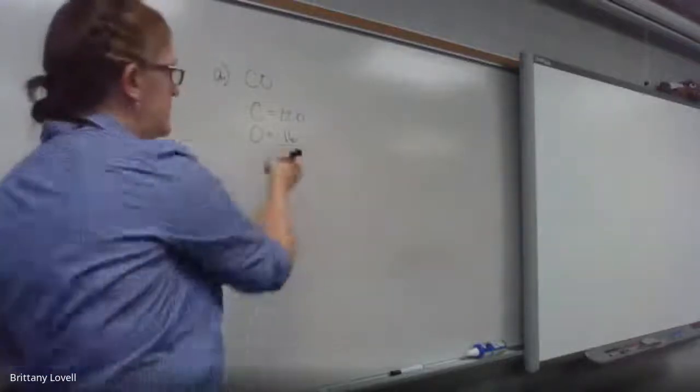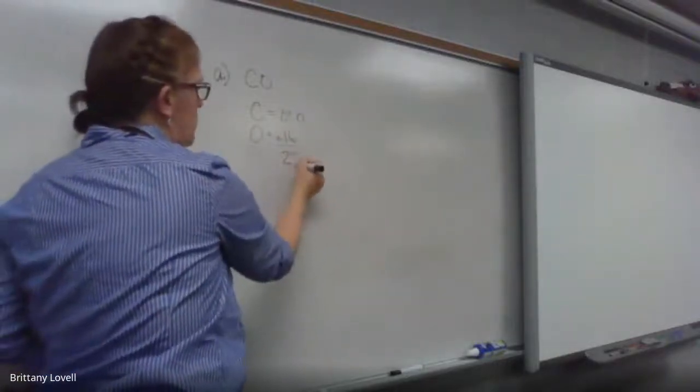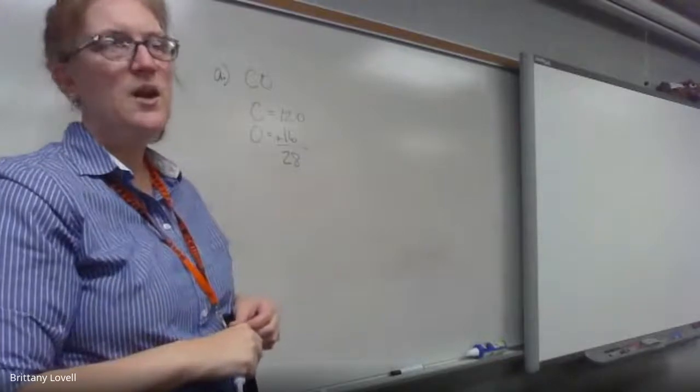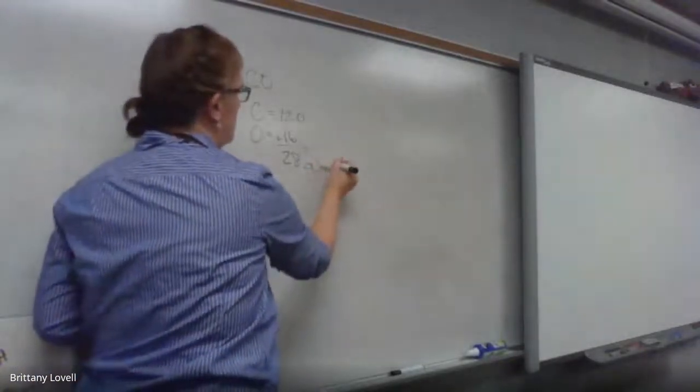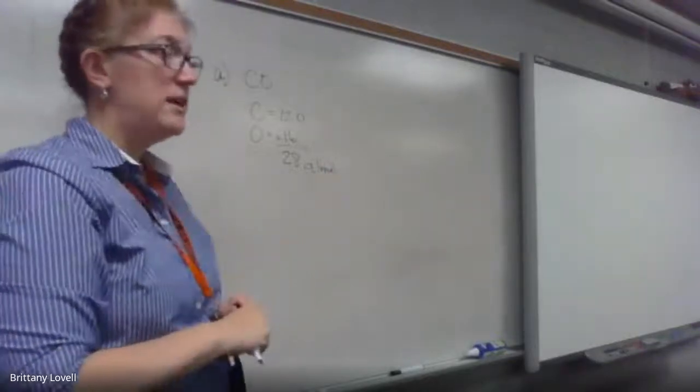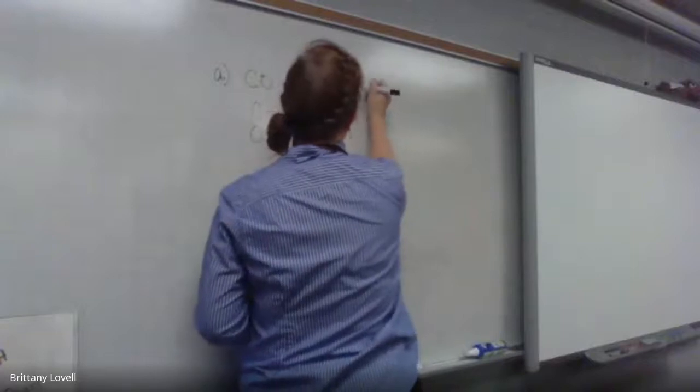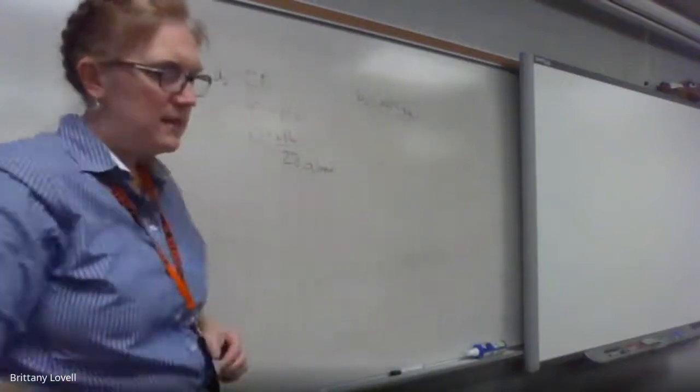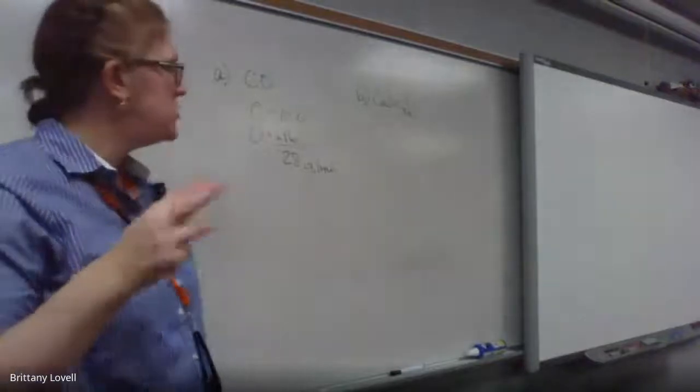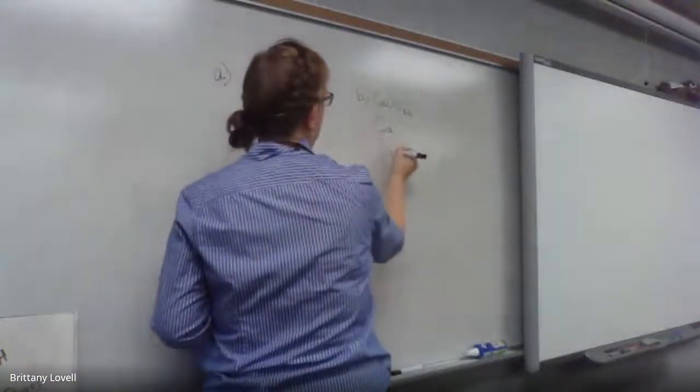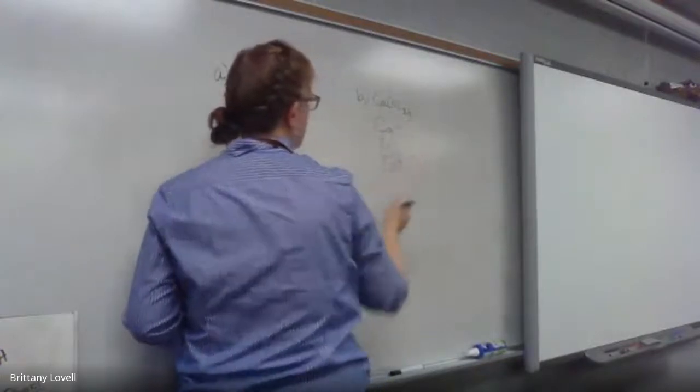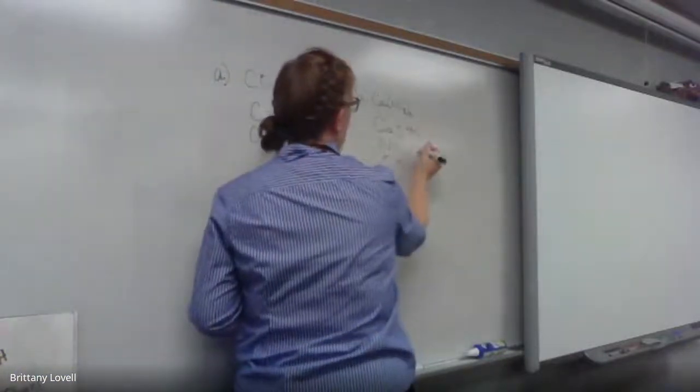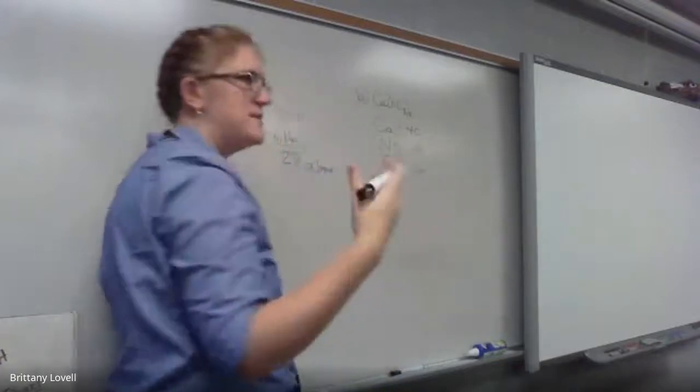So to find the total molar mass, you add them. So here would just be 28.0. And the unit for molar mass, does anybody remember? Grams per mole. Very good, guys. Grams per mole. Let's go ahead and look at letter b. Letter b, you have Ca(NO3)2. Let's make a list of the elements that are involved. You have calcium and nitrogen and oxygen: Ca, N, and O.